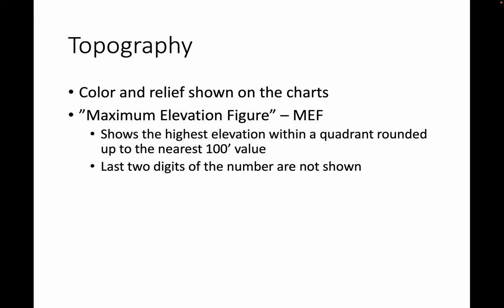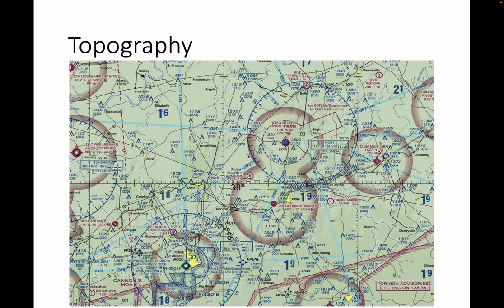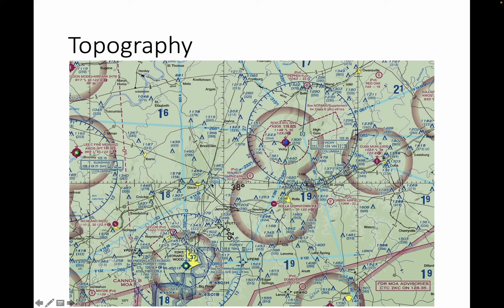Let's talk about topography. Relief is shown on the charts using color, and there is this maximum elevation figure, which shows the highest elevation within a quadrant rounded up to the nearest hundred. The last two digits of the number are not shown. Here's a chart section near Missouri S&T. You can see the map is divided up into quadrants, and the last two digits are dropped — so this is a 1,600 feet maximum elevation figure for this quadrant. That's feet above mean sea level. All elevations on a chart are given in height above mean sea level, MSL — not height above ground level.